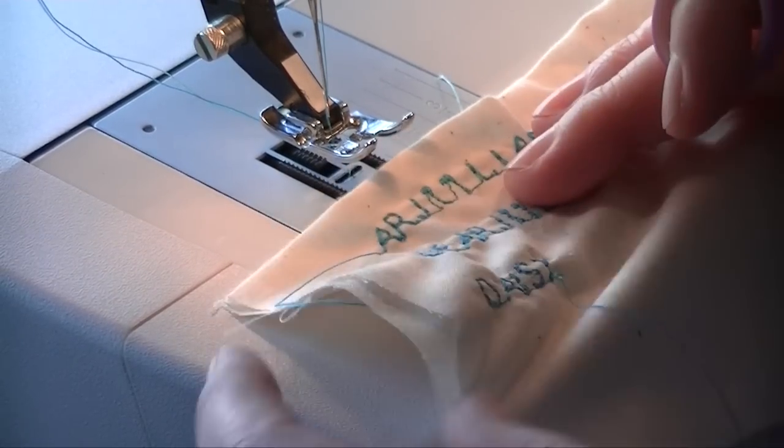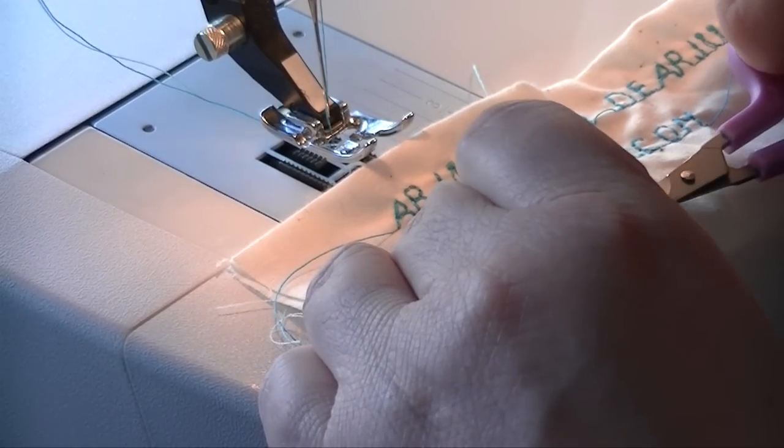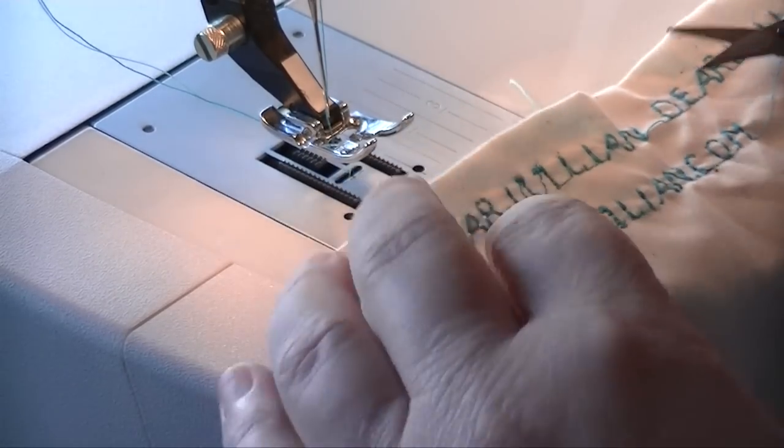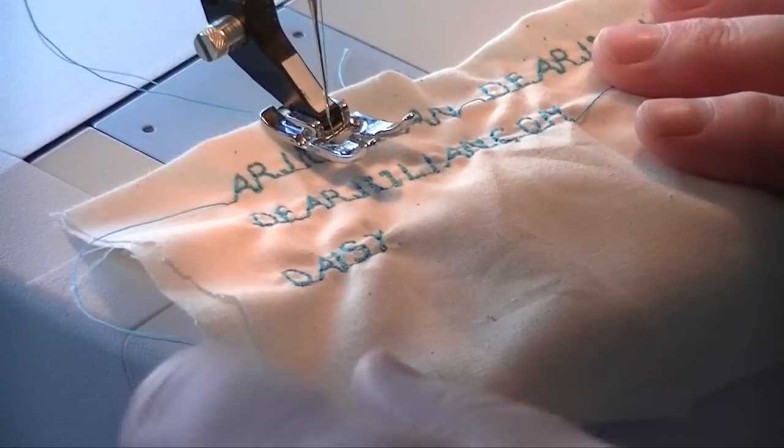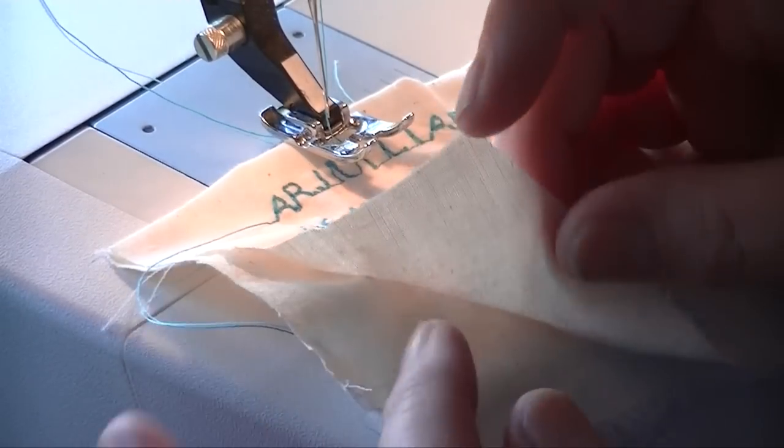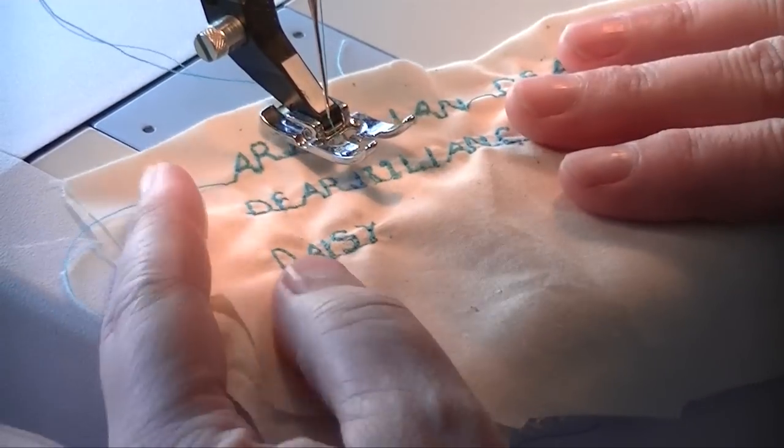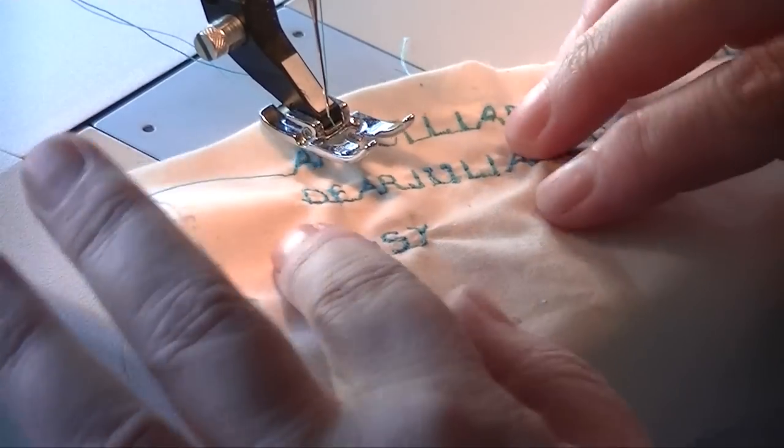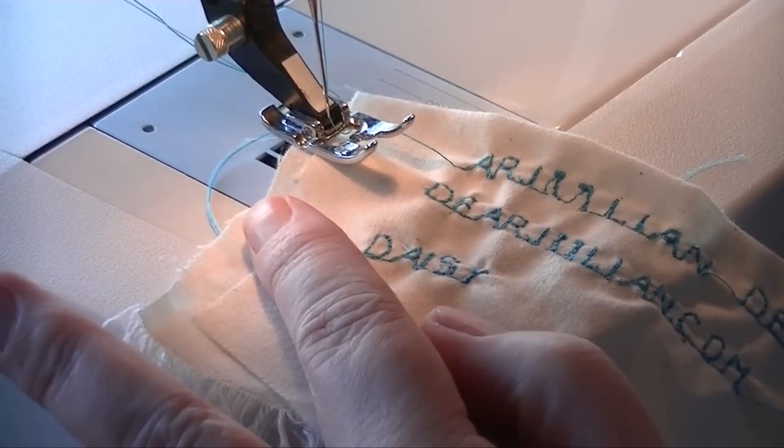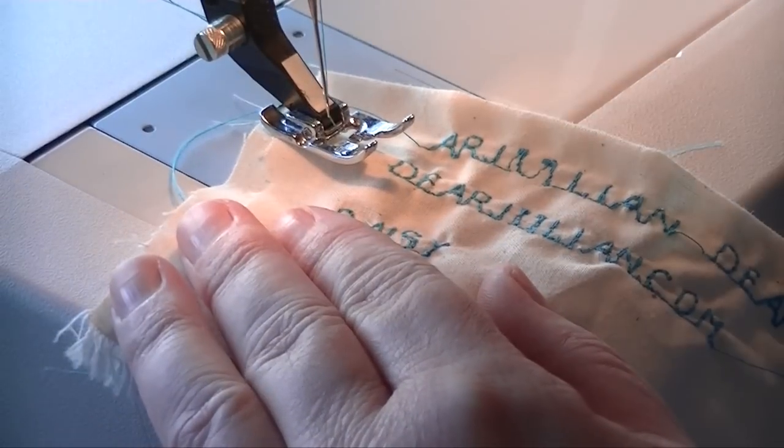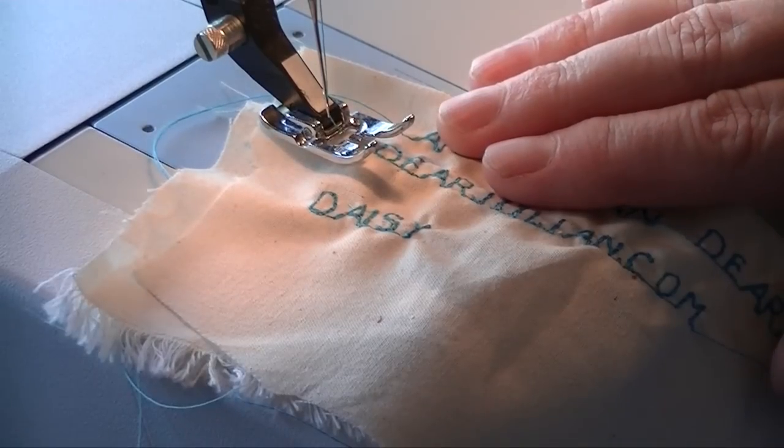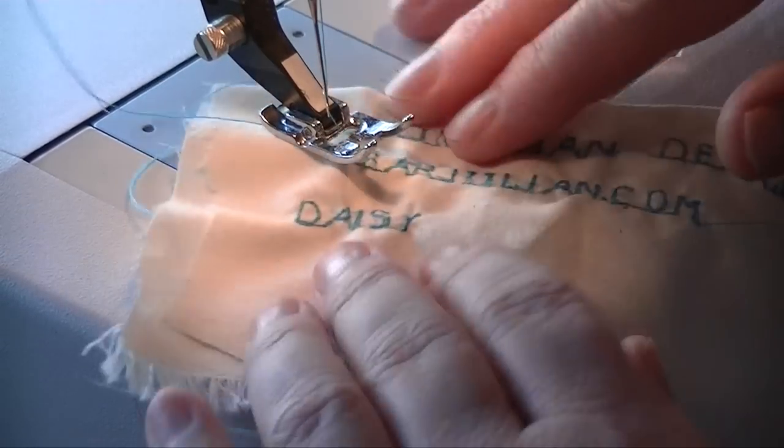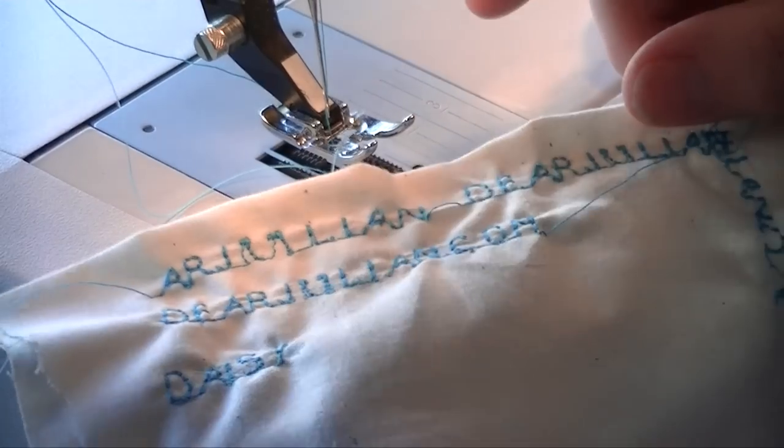I think what I'm going to try to do next is take one layer of interfacing and iron it to what would be the bottom of this, then fold the fabric over and try it that way too, because you get a lot of puckering. I've tried loosening up the presser foot and the tension and it still gets a lot of puckering, but I like it. I like the look of it and that's what I wanted it for.